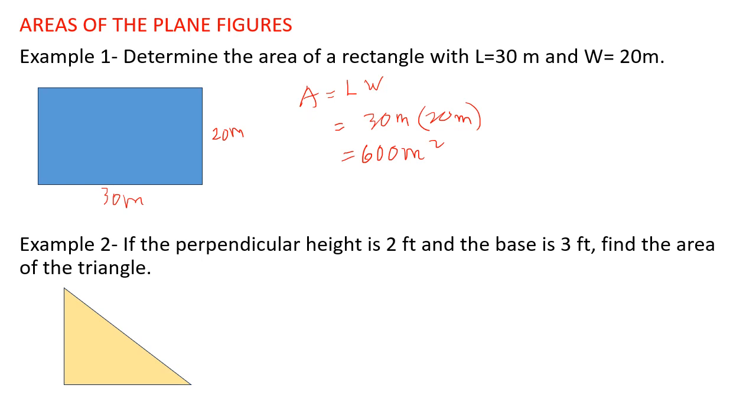Example 2: If the perpendicular height is 2 feet and the base is 3 feet, find the area of the triangle. Area equals one-half base times height, equals one-half times 3 times 2, equals 3 feet squared.